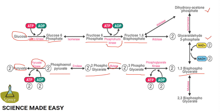Two molecules of pyruvate and ATP are obtained as the end products of the reaction. In total, the 10-step process converts one molecule of glucose into two molecules of pyruvate. A total of 4 ATP are produced, but 2 ATP are used during the process, resulting in a net gain of 2 ATP.